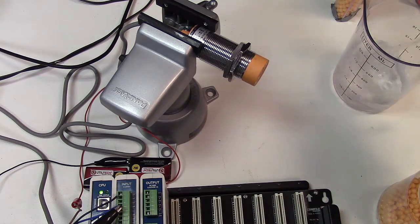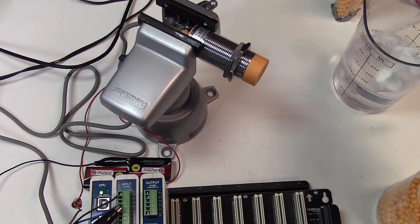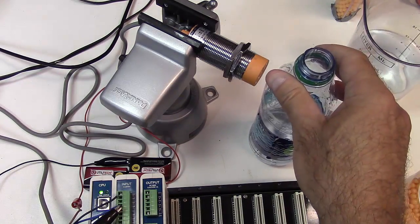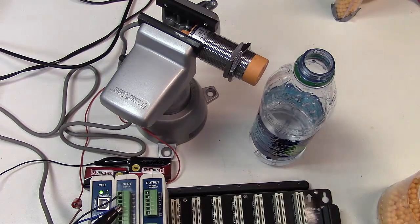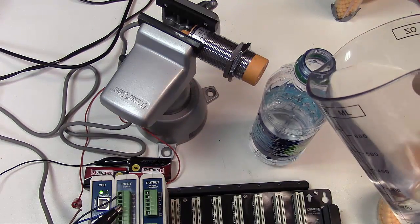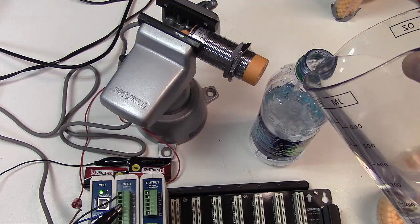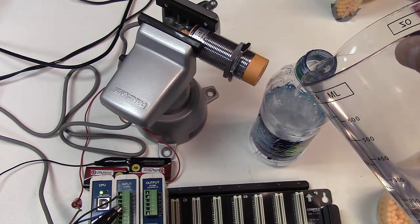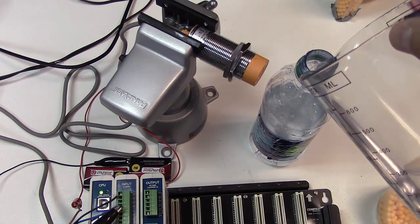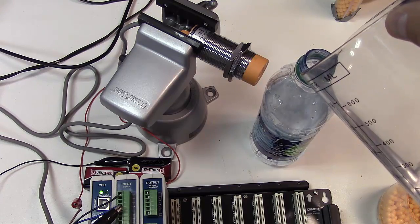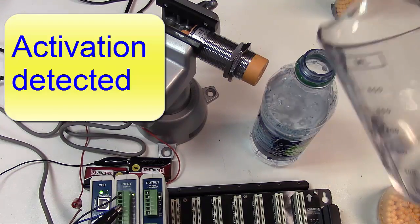In fact we can pull the bottle quite a ways away and still have an activation. So I'm going to try this again. So here we are sitting about a centimeter away from the PROX sensor and I'm going to keep pouring water in it. Okay and there you've got an activation.